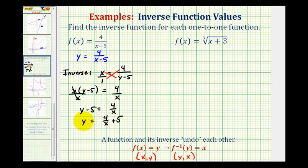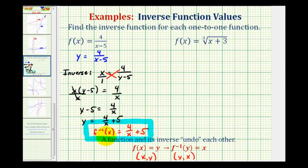Our last step is to replace y with f inverse of x. So f inverse of x is equal to four divided by x plus five. If we have graphing software, there's a nice way to check our work graphically: if we graph the original function and the inverse function on the same coordinate plane, the two functions should be symmetrical across the line y equals x.